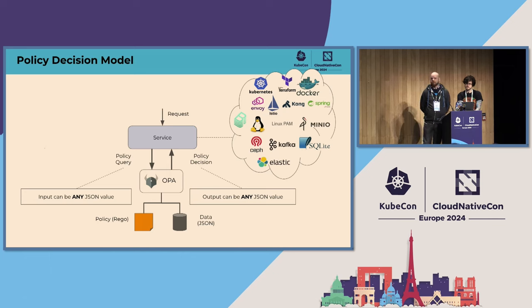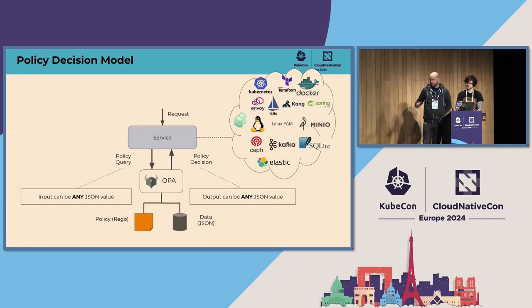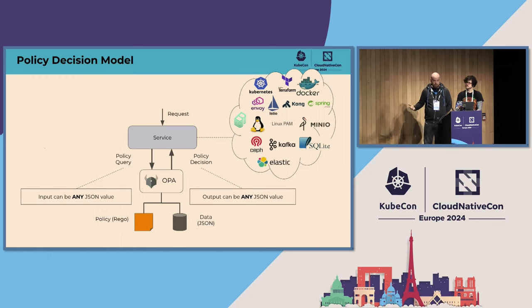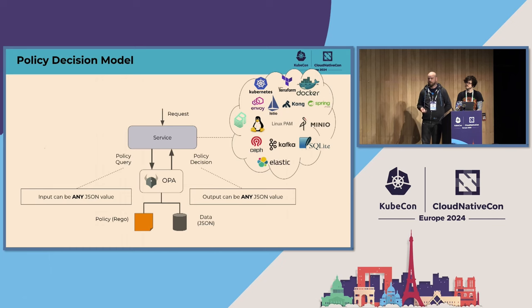How does it work? It's a fairly simple model called the policy decision model. You have a service — and we have a broad definition of that: it could be a Linux PAM module, a Kafka broker, a microservice — basically anywhere you have a request from a user or another service. Rather than making a decision on that request yourself, you delegate that to OPA: should this request be allowed or not? The query you send to OPA is just JSON, and what you get back as a decision is also just JSON — JSON in, JSON out.